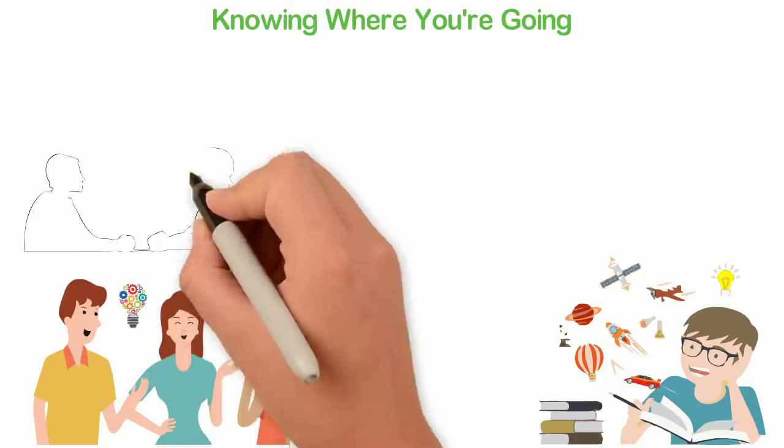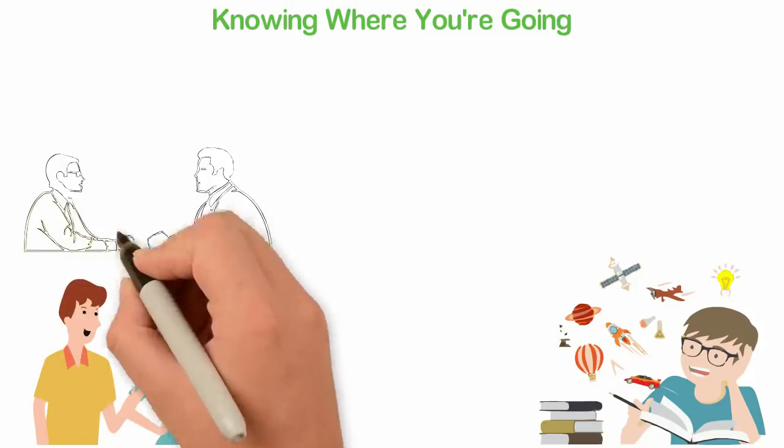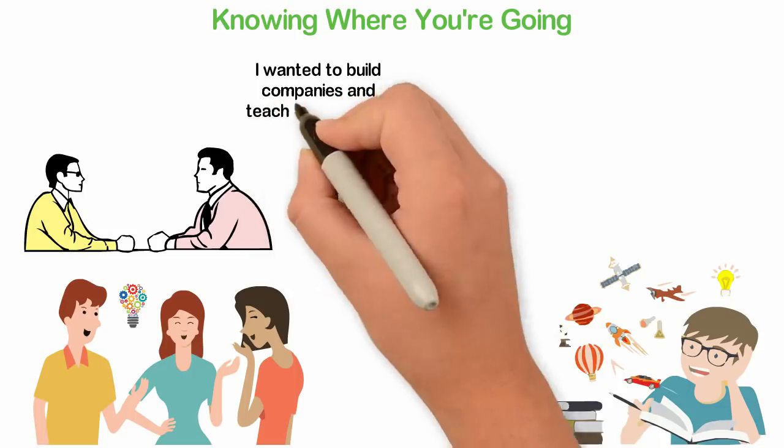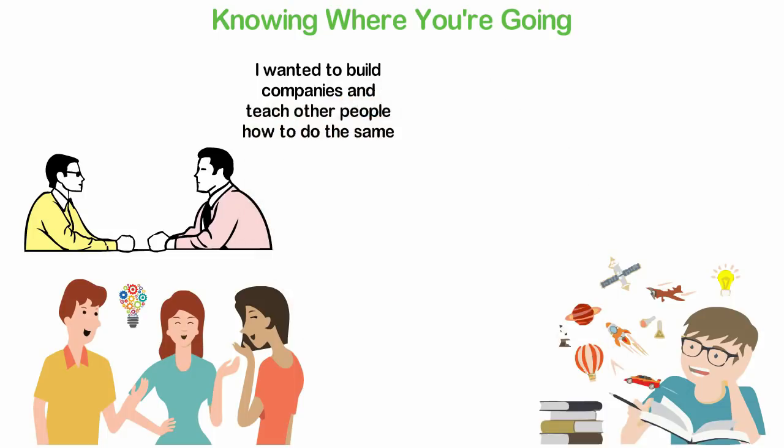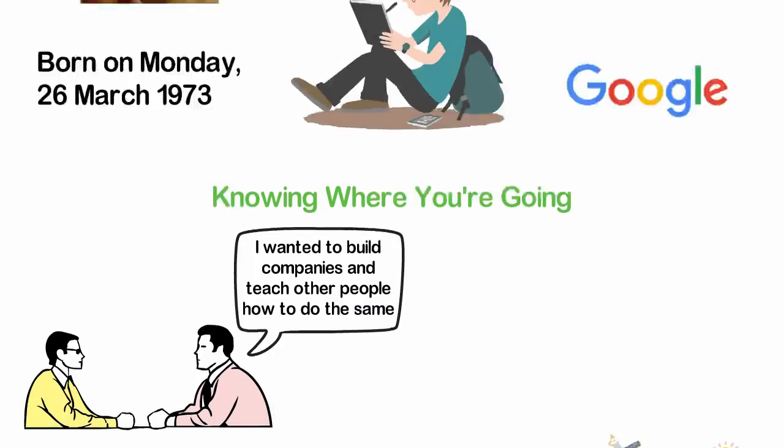At age 21, when my elder brother asked what I wanted to do with my life, I did not think twice because I already knew what it is. I wanted to build companies and teach other people how to do the same. Because of this definiteness of purpose, it was super easy for me to make the right decisions in my life.